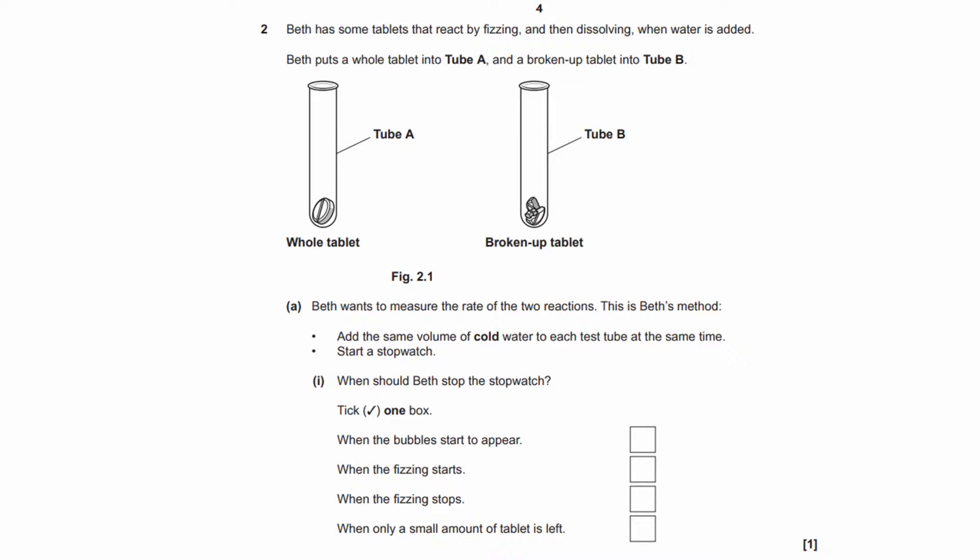So we want to choose the option that tells us when the reaction has stopped, because we're measuring the rate of the reaction. We know Beth has started the stopwatch, so that must have been at the start of the reaction. But when do we stop the stopwatch? And that is when the reaction stops. Which of these are indicators for the reaction stopping? So it's actually the third one, when the fizzing stops.